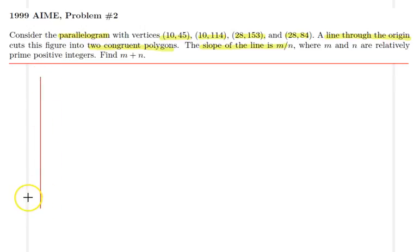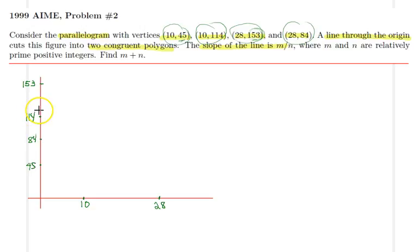I realize that the shape is in the first quadrant. These first two points are on x equals 10, so let's mark x equals 10 here, and then the other two points are on x equals 28, so that would be 28. The greatest y component is 153 and the smallest one is 45, so let me just put 153 here. Somewhere here would be 45, then I would have 84 up here and 114.